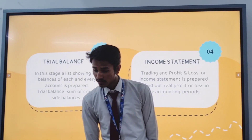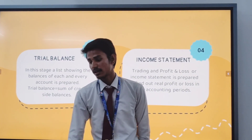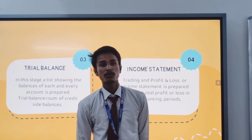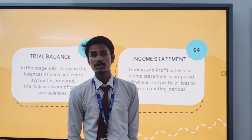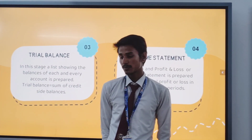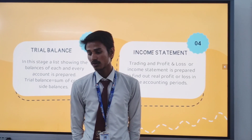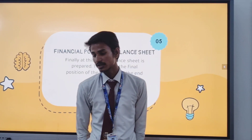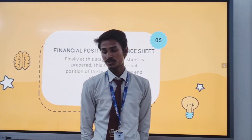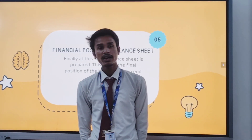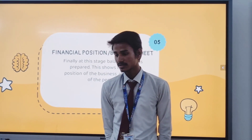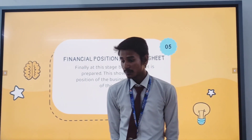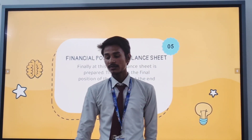The fourth step is the income statement. A trading and profit and loss or income statement is prepared to find out real profit or loss in the accounting period. The fifth step is the financial position or balance sheet. At this stage, a balance sheet is prepared, which shows the final position of the business at the end of the period.